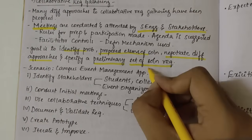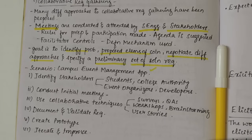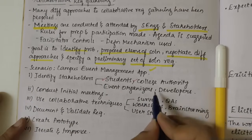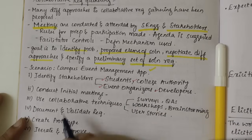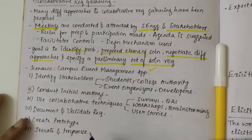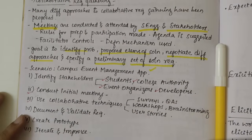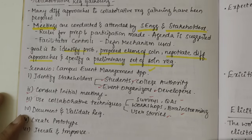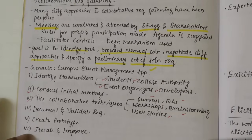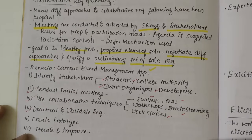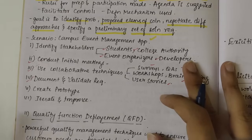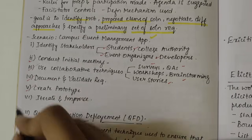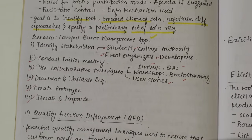For example, consider a Campus Event Management Application. We first identify the stakeholders: students, college authority, developers, and event organizers. Then we conduct a meeting following all the above conditions and use collaborative techniques — surveys, Q&As, workshops, brainstorming, and user stories — to gather the information. Once the information is gathered, we document and validate the requirements. Once properly documented and validated, we create a prototype, then iterate and improve it further.